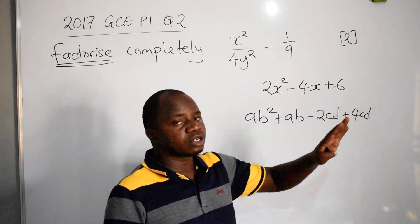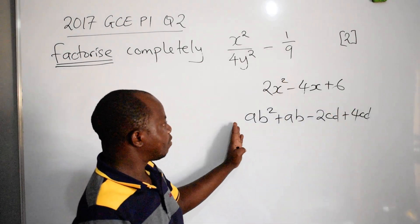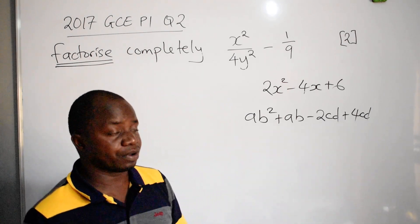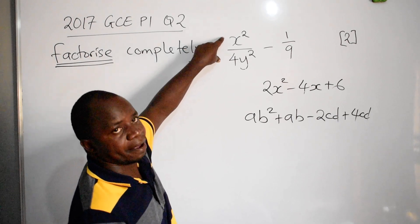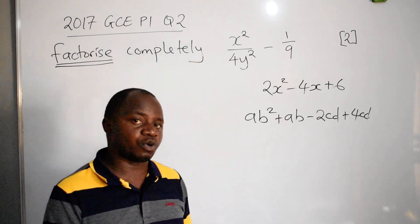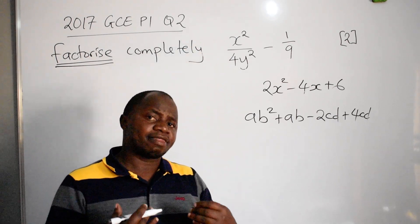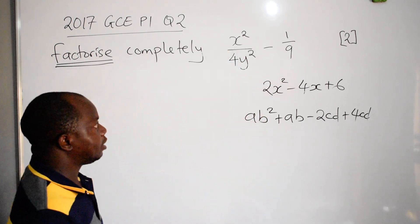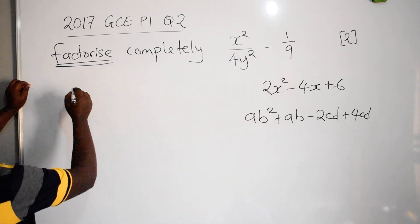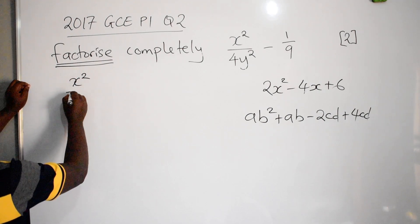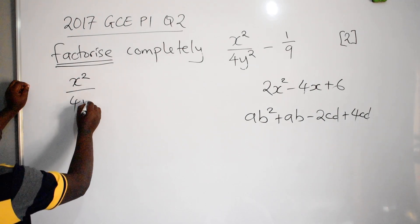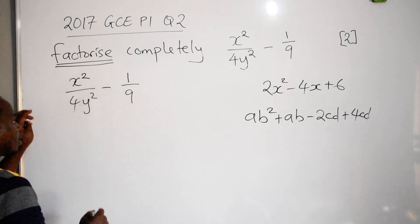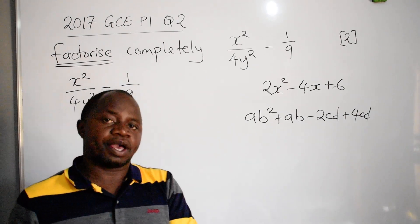What we have here is difference of two squares. Once you identify that, the first step is to copy the equation: x squared over 4y squared minus 1 over 9. For difference of two squares, everything must be expressed in square form.